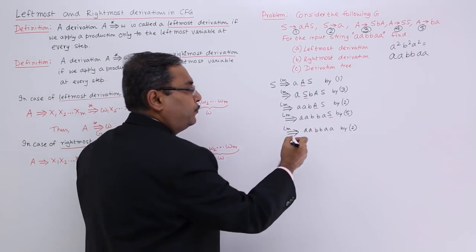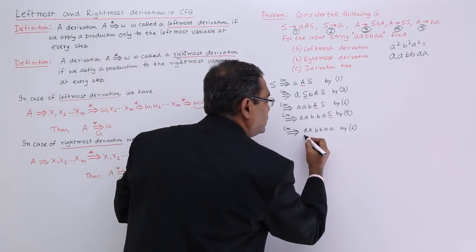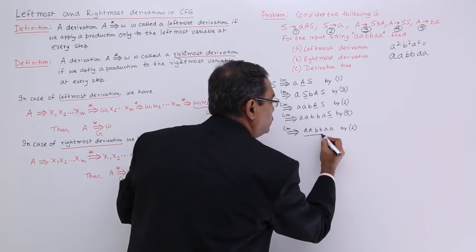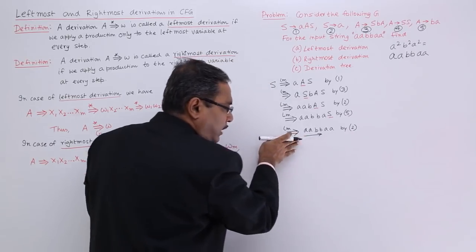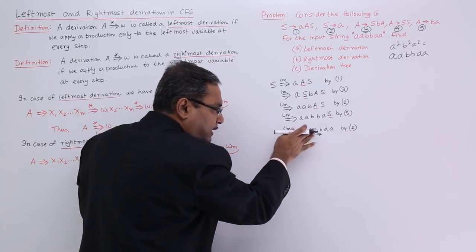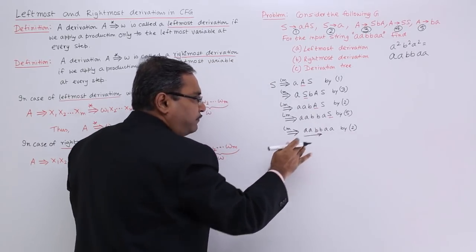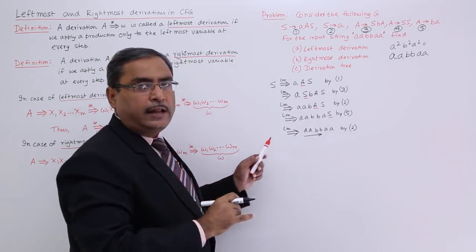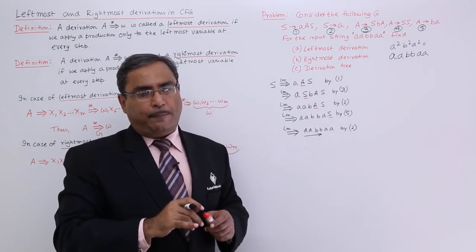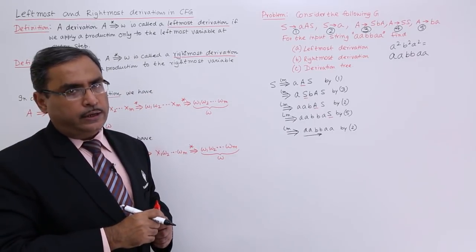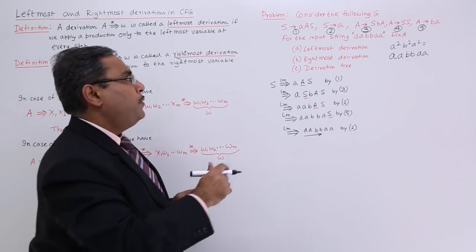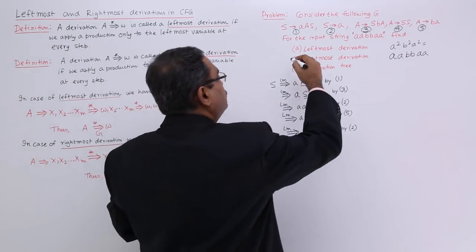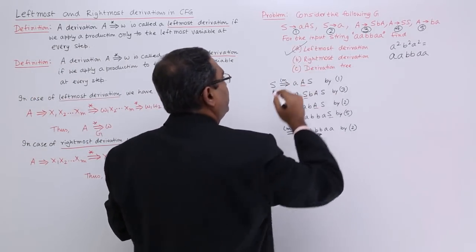We have these leftmost derivations because we started from the left-hand side, found the first non-terminal, and applied the respective production rule accordingly. So we have completed the leftmost derivation.